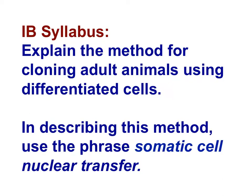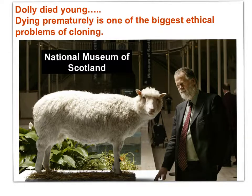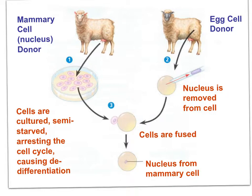The next IB syllabus statement: explain the method for cloning adult animals using differentiated cells, using the phrase 'somatic cell nuclear transfer.' This technique using differentiated cells — called somatic cell nuclear transfer — begins with two donor cells from two animals.